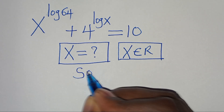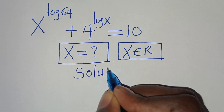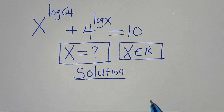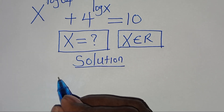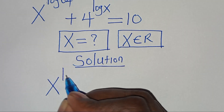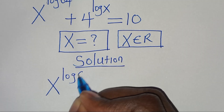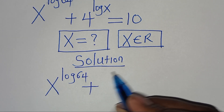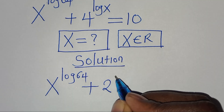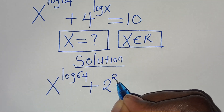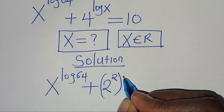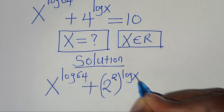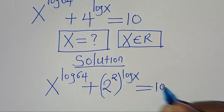So let's provide a solution from here. We have x to the power of log 64 plus 4, which we can express as 2 to the power of 2, raised to the power of log x, this is equal to 10.